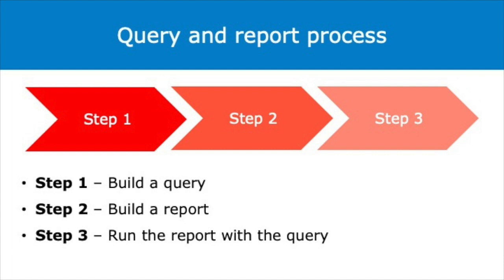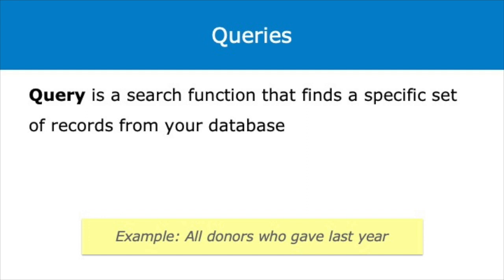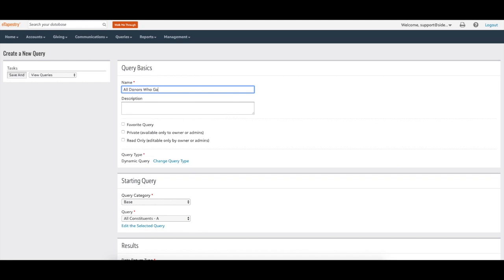To define these two features further, let's use an example report that you might want to run. Let's say we want to run a report on total giving last year with contact information for all donors that gave last year. We first need to start with our query definition. A query is a search function that finds a specific set of records from your database. Records in eTapestry are data elements like accounts or journal entries. A query finds records based on a specific set of search criteria and bundles those records together in a group. Alternatively, you can think of a query as a filter. While the results of a query can be exported, a query doesn't display data, report data, or format data in what you might think of as a report. It only finds specific records in your database. For the example report we want to build in this video, our query will be all donors that gave last year.